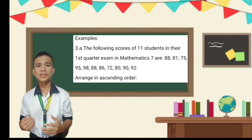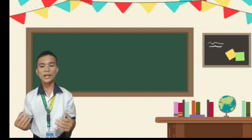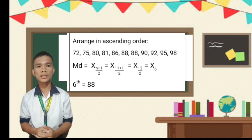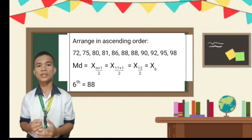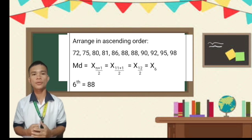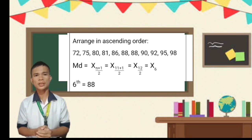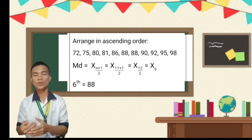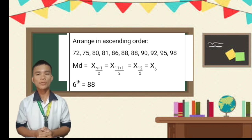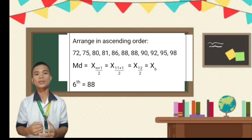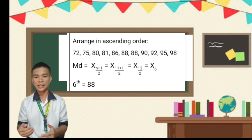Arranged in ascending order: 72, 75, 80, 81, 86, 88, 88, 90, 92, 95, and 98. Since the number of values is odd, we use the formula: Median = x sub (n/2 + 1) = x sub (11/2 + 1) = x sub 6 = 88. Thus, our middle score falls in the 6th place in the array, which is 88. Half of the students scored 88 and below, while the other half scored 88 and above.